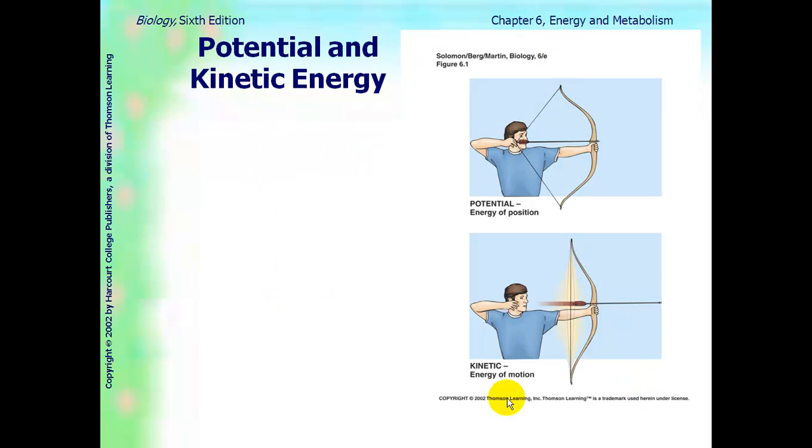There are two types of energy, potential energy and kinetic energy. Potential energy is stored energy, so it's the energy of position, as in this picture. Kinetic energy is the energy of action or motion.